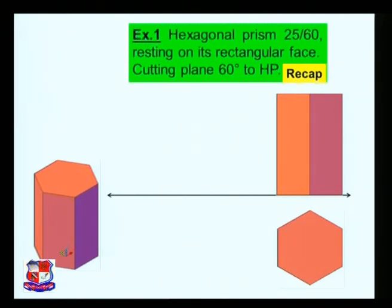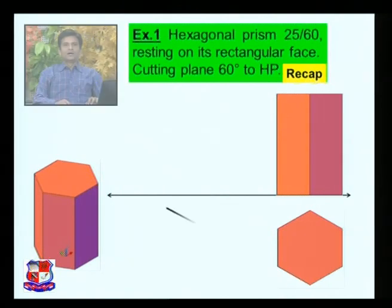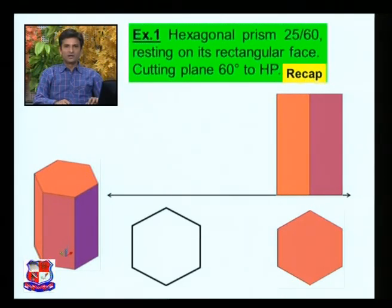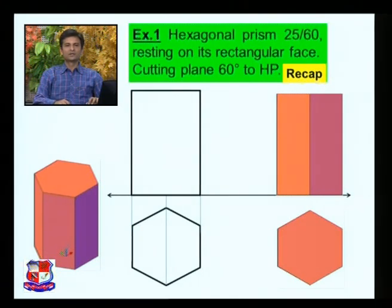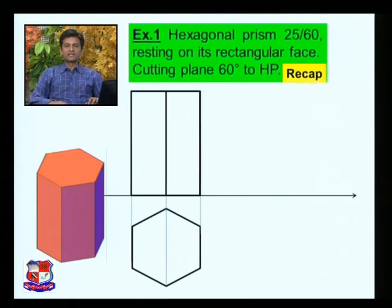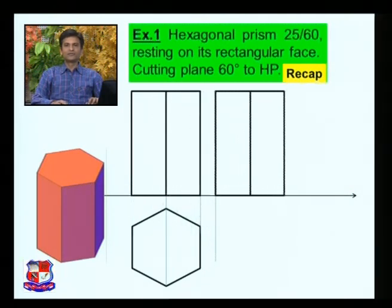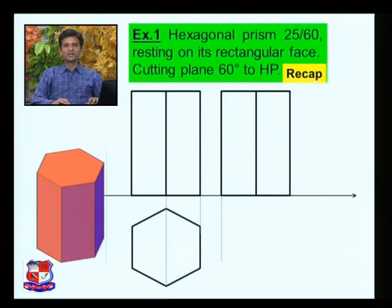We discussed up to this step. The top view of the hexagonal prism would be hexagonal, as it is resting on a rectangular face. Draw the hexagon such that two sides are parallel and perpendicular to the XY line. Draw projection lines from each end — this rectangle shows the front view of the hexagonal prism, with the visible edge shown. It is resting on its rectangular face, so we tilt it accordingly, as a hexagonal prism has six rectangular faces.